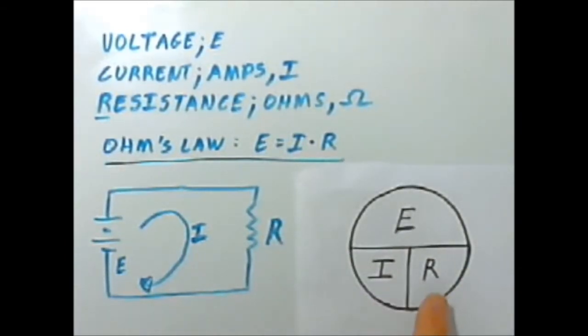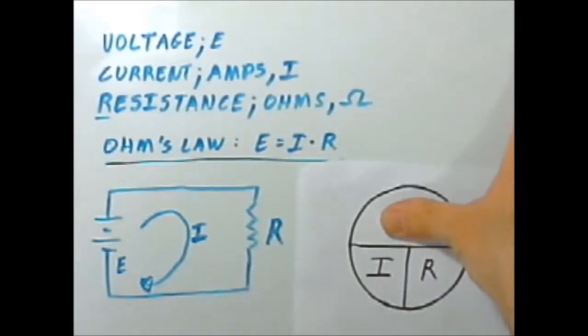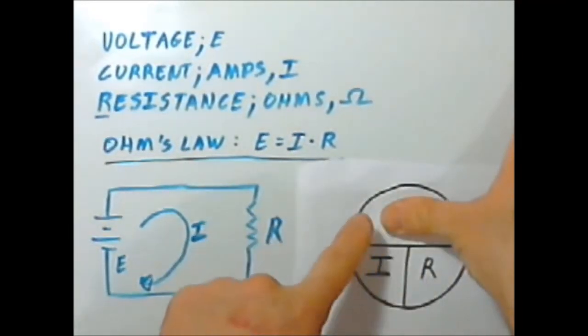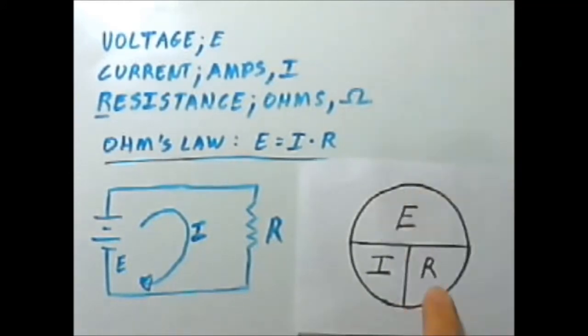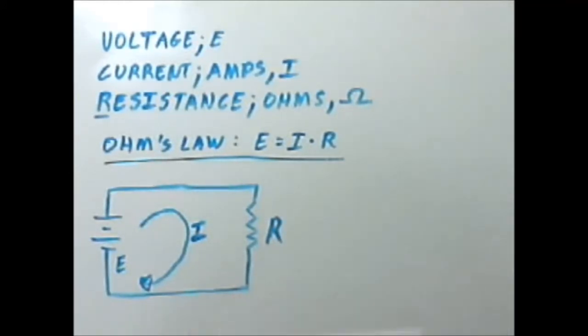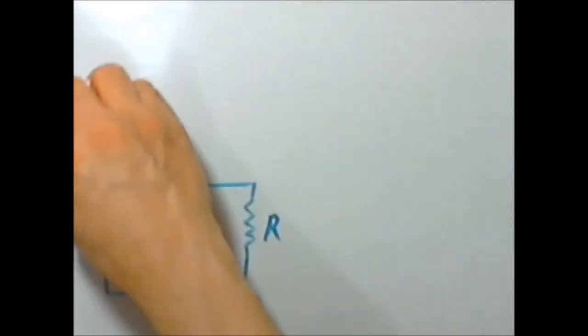If we know the current and the resistance, and we need voltage, then we cover the voltage, and that tells us that we need to multiply current and resistance in order to do that. So with that, we're going to work a couple of quick problems here.